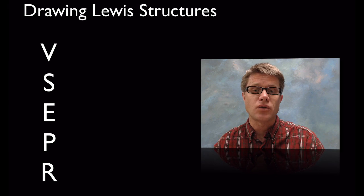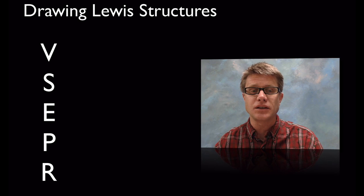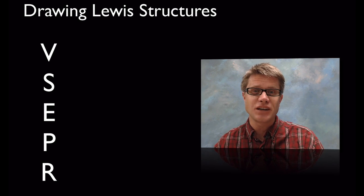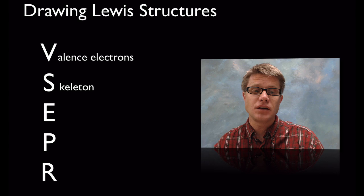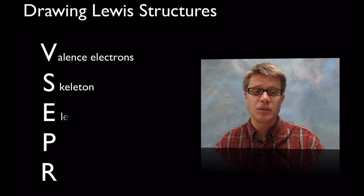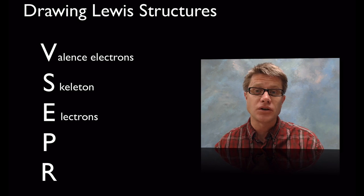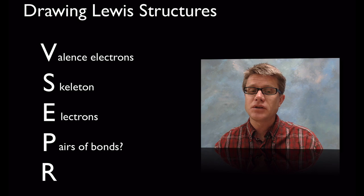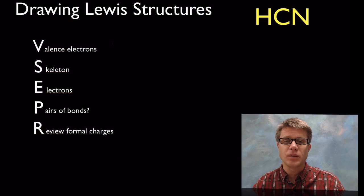The first thing we have to do is know how to draw Lewis structures. There are lots of different methods, but I couldn't find any good mnemonic devices, so we're going to use VSEPR twice. VSEPR is our model of repulsion, but it's also an easy way to remember how to draw Lewis structures. When drawing a Lewis structure: first, add up all the valence electrons; next, sketch out the skeleton; then add electrons to the most electronegative atoms first, working outside to inside; look for pairs of bonds; and finally review the formal charges.